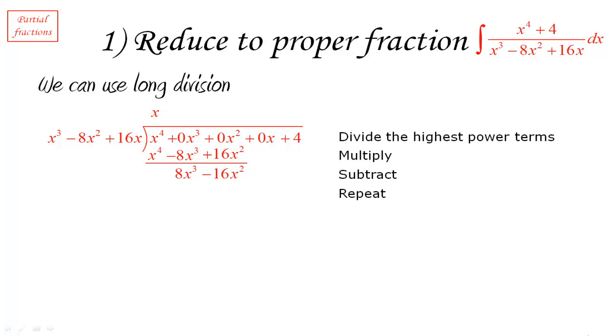Now what we're going to do is we're going to do it again. So what we do is we take the 8x cubed that we have now. We're going to divide that again by the x cubed that we have here. And that gives us an 8. So we're going to write that plus 8 as part of our quotient. Remember what we're building up on the top line there on the top row is the quotient.